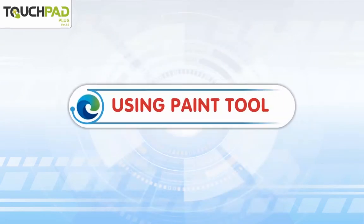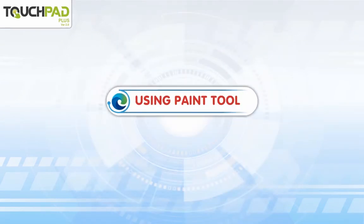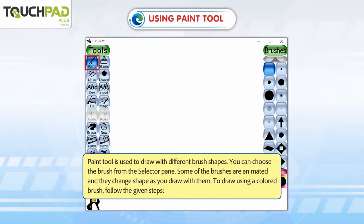Using the Paint tool. The Paint tool is used to draw with different brush shapes. You can choose the brush from the selector pane. Some of the brushes are animated and they change shape as you draw with them. To draw using a colored brush, follow the given steps.